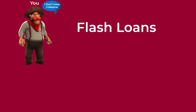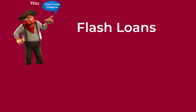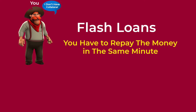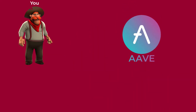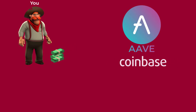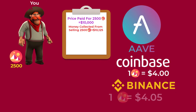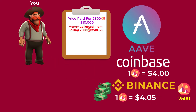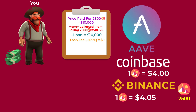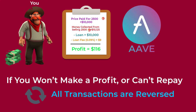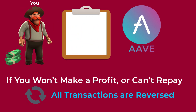This is called flash loans. The catch is that you have to repay the money right away, in the same minute or so. For example, you can borrow $10,000, buy 2,500 monotokens for $10,000 on Coinbase, and sell them for $10,125 on Binance. Then you repay the loan plus the $9 fees and keep the $116 in profit. If you didn't repay the loan or didn't make a profit, the smart contract automatically reverses the transaction and the funds are returned to the lender.